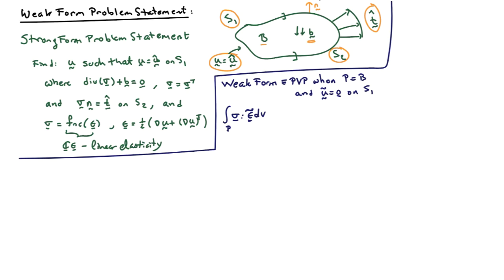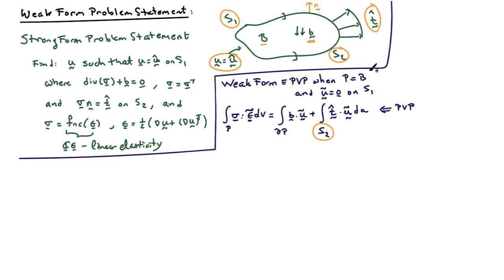In the principle of virtual power, we have the integral over the body of the stresses double-contracted with the virtual strain rate ε̃, plus the external virtual power term — the body forces dotted with the virtual velocity — and the integral of the tractions dotted with the virtual velocity over the entire surface. Our entire surface is composed of S1 and S2, but on S1, ũ equals zero, so we only pick up an integral over S2.